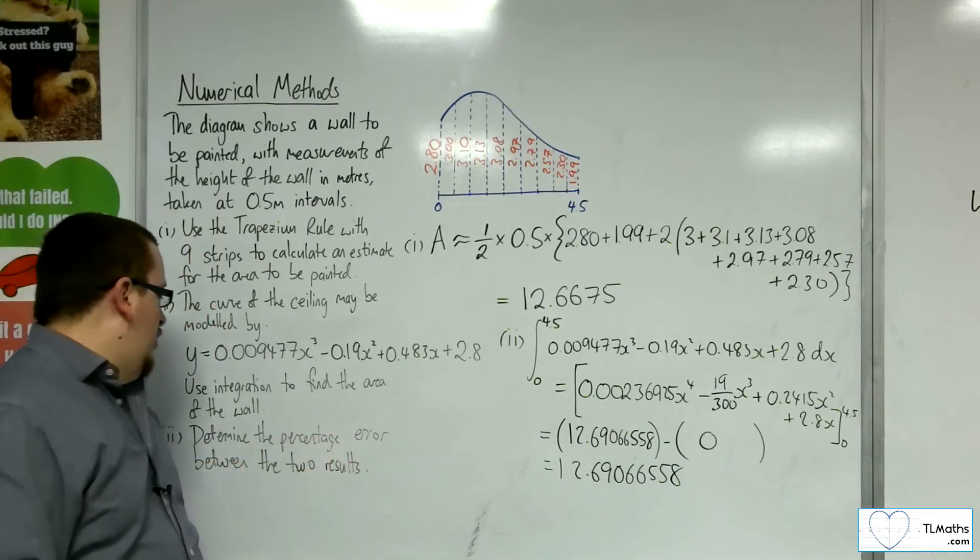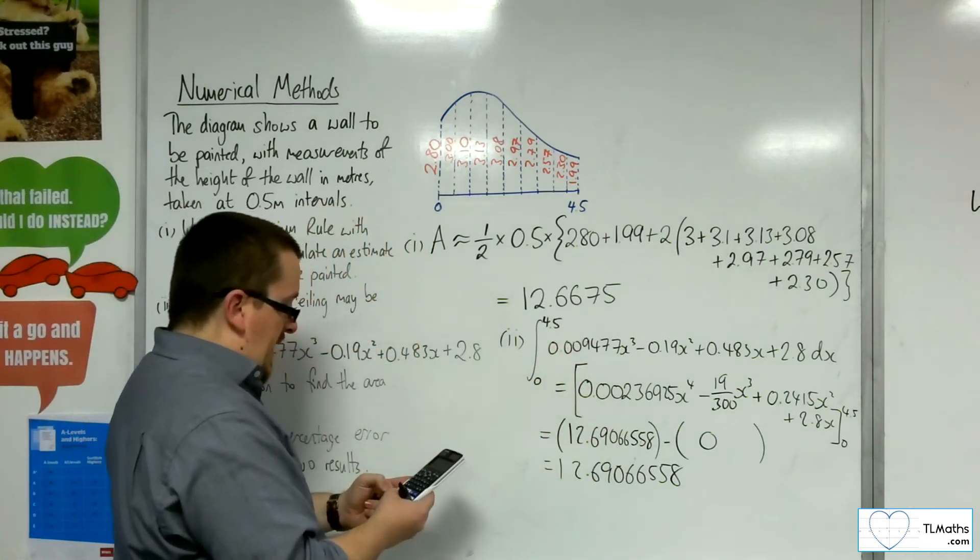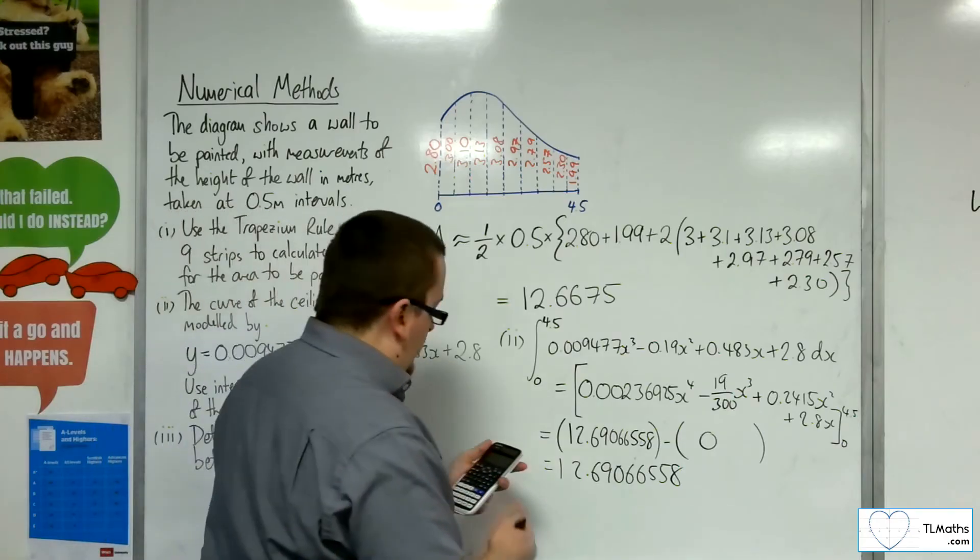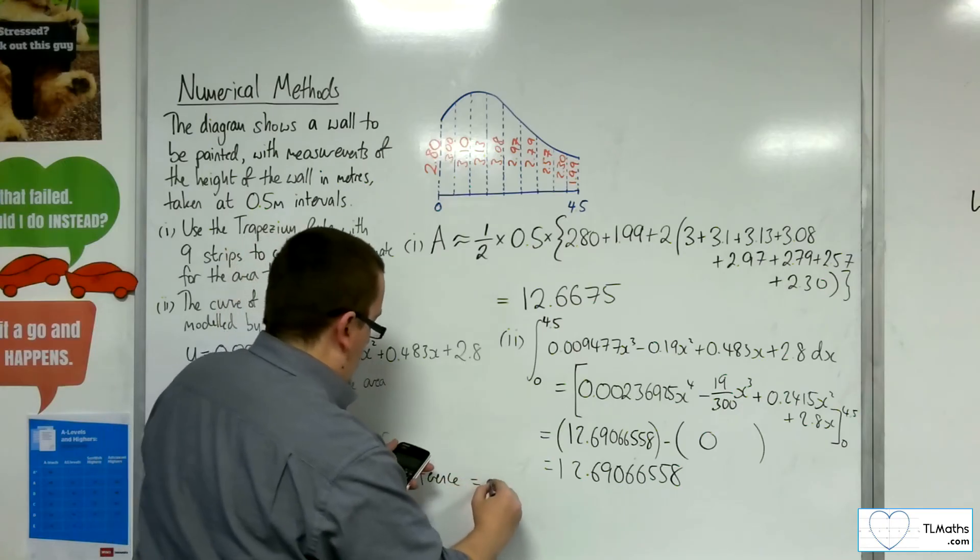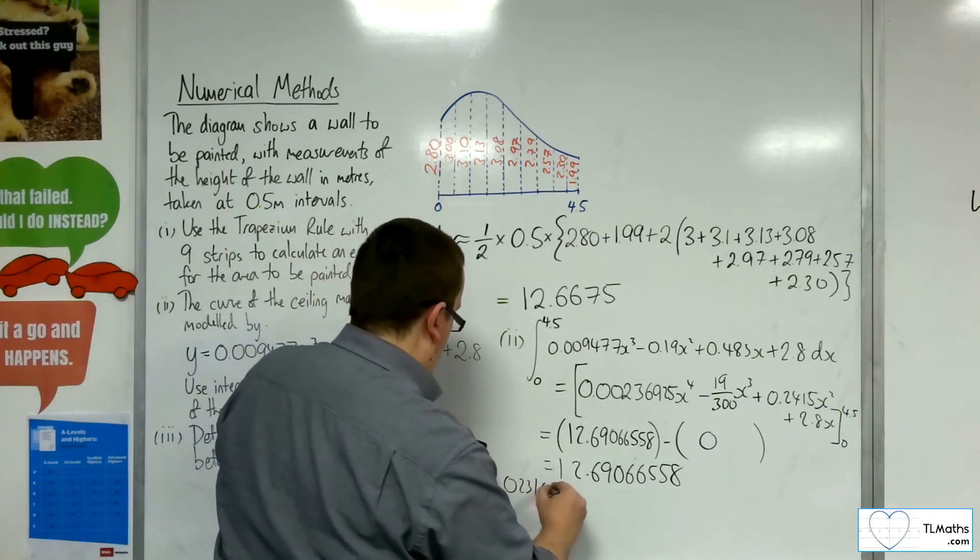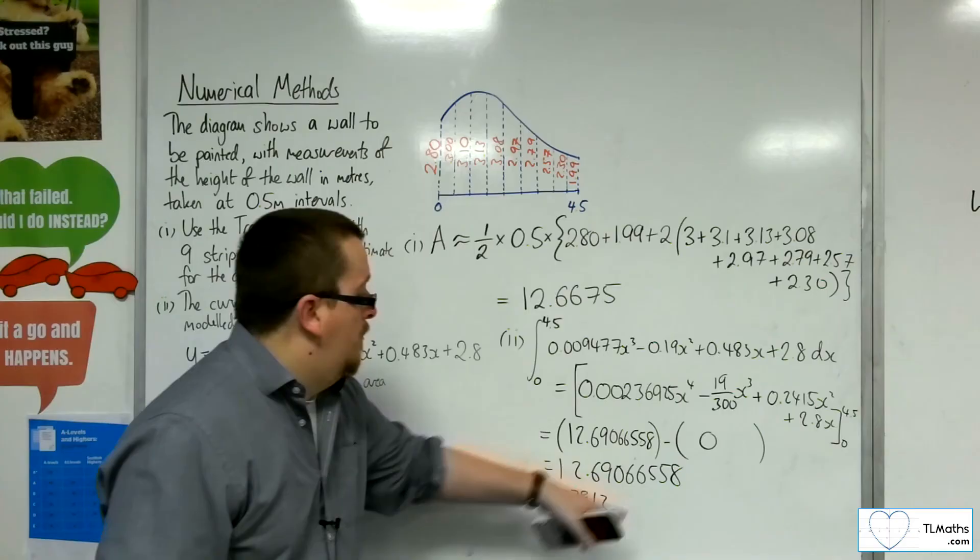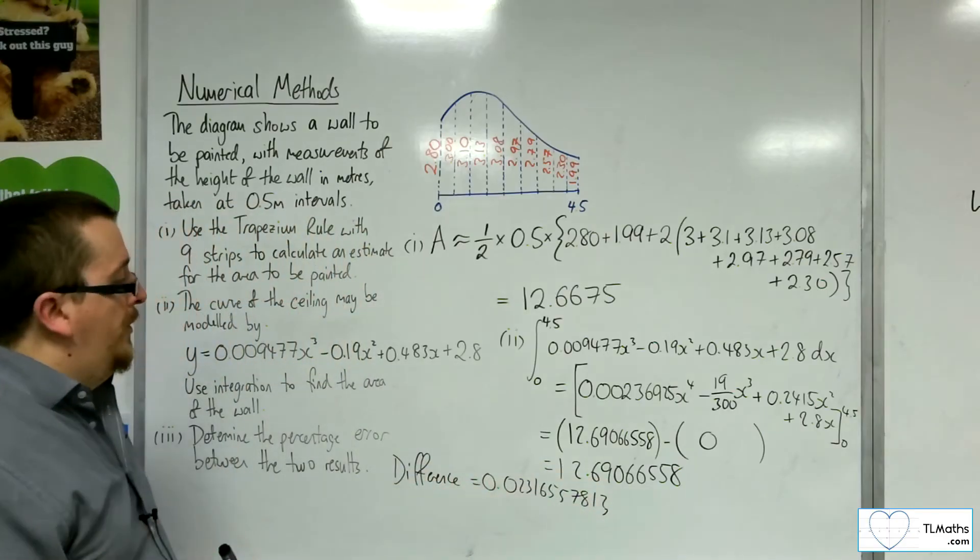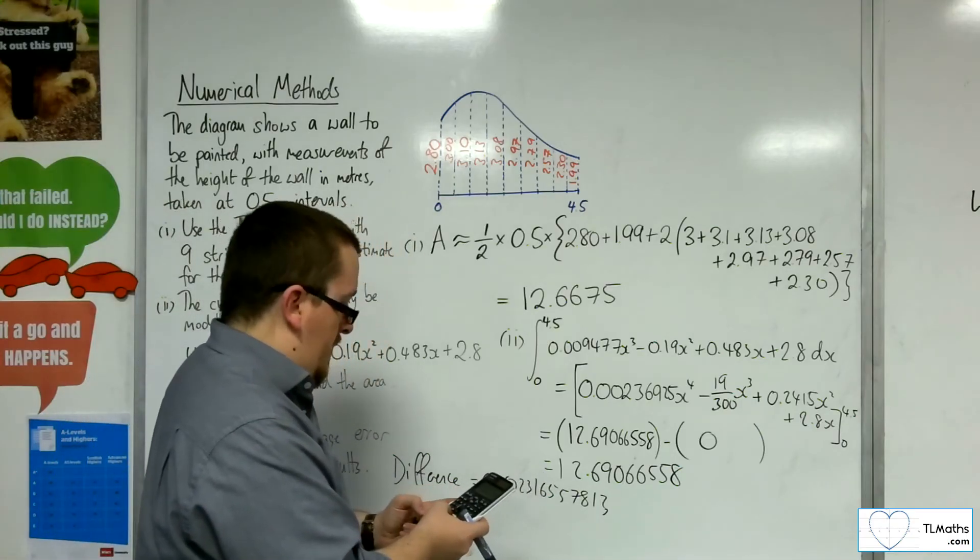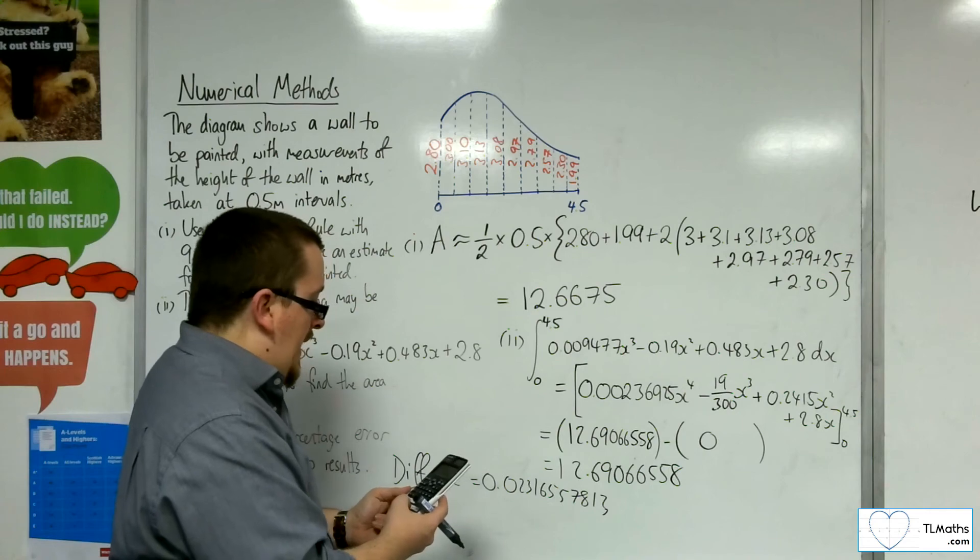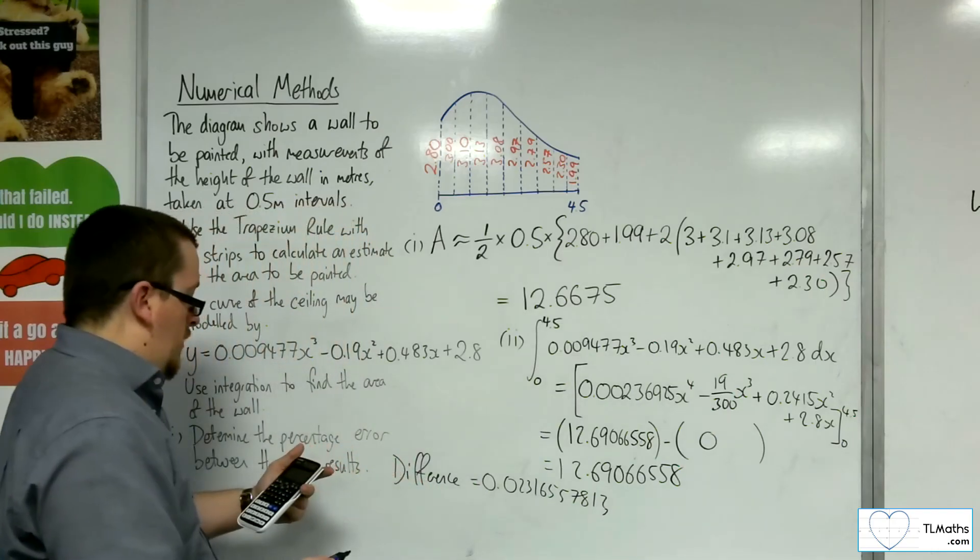So determine the percentage error between the two results. If I find the difference between those two, take 12.6675, so the difference between them is 0.02316557813. Now if I divide that by the more accurate result using the integral, so divide that by 12.69066558, and then times that by 100, that'll get me my percentage error.